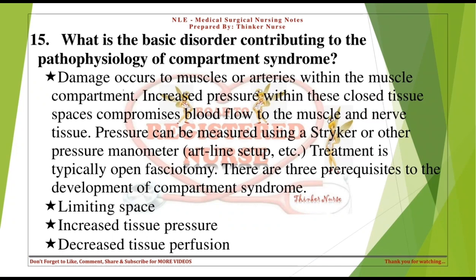What is the basic disorder contributing to the pathophysiology of compartment syndrome? Damage occurs to muscles or arteries within the muscle compartment. Increased pressure within these closed tissue spaces compromises blood flow to muscle and nerve tissue. Pressure can be measured using a Stryker or other pressure manometer or arterial line setup. Treatment is typically open fasciotomy. Three prerequisites: limiting space, increased tissue pressure, and decreased tissue perfusion.